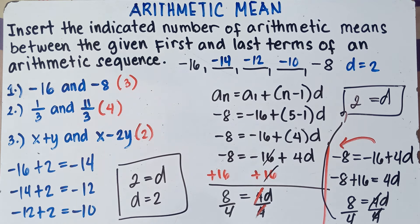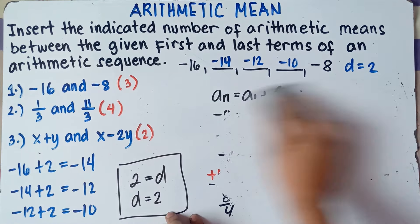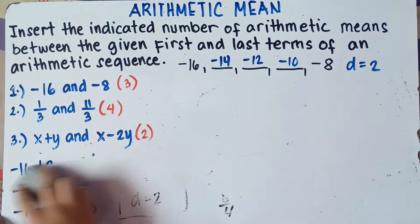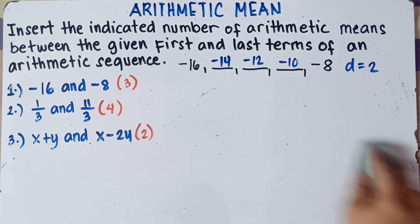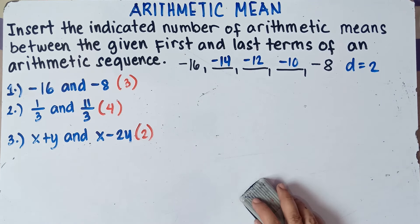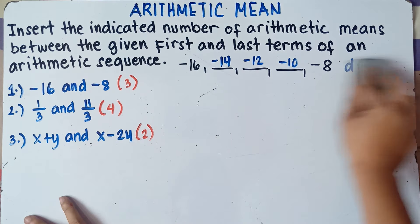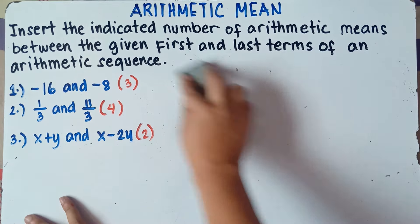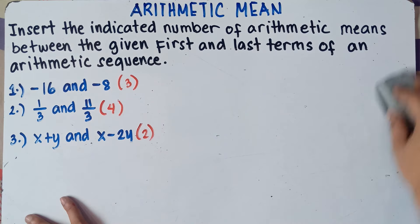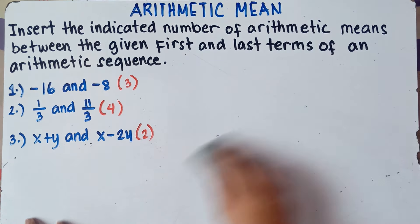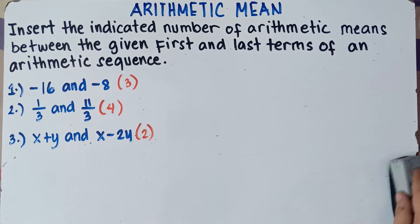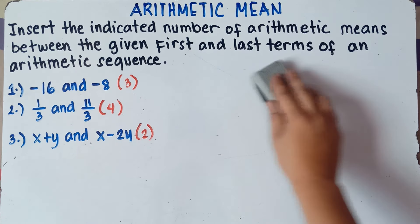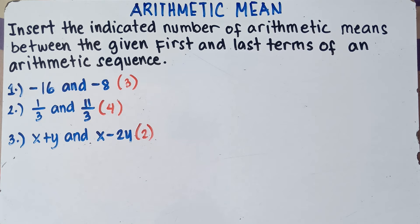Let's have example number 2. The answer for number 1 is: negative 16, negative 14, negative 12, negative 10, negative 8, common difference 2. If you have questions about arithmetic mean, feel free to leave a comment below or message me on our Facebook channel, same name as our YouTube channel.